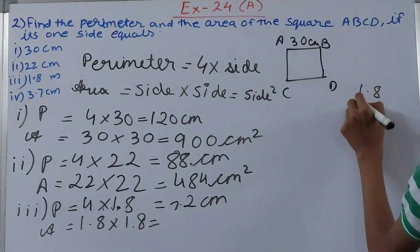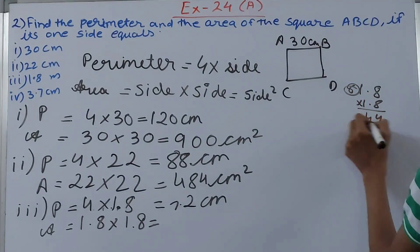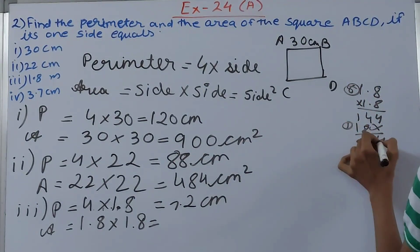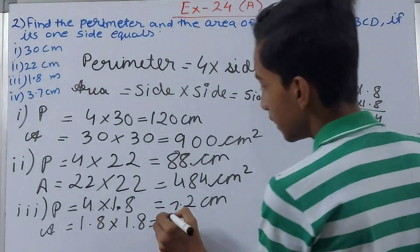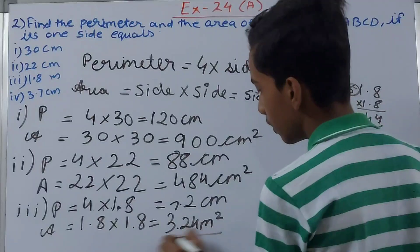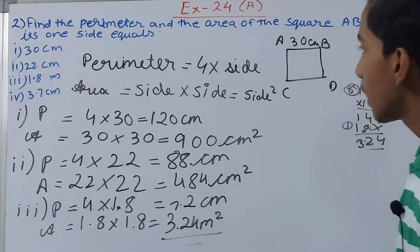So 1.8 into 1.8, this will be 4, 6, 14, 1, 18, 1, 4, 12, 1, and 3, so 3.24. 3.24 square meter. This will be our area.